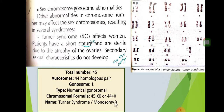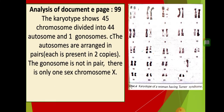The name of this disease is either Turner syndrome or monosomy X — meaning one X chromosome. We need to remember: when there is only one X chromosome in the karyotype, it is called Turner syndrome or monosomy X. Now analyzing document, page 99: the karyotype shows 45 chromosomes divided into 44 autosomes and one gonosome. The autosomes are arranged in pairs, each present in two copies. The gonosome is not in a pair — there is only one sex chromosome, the X.